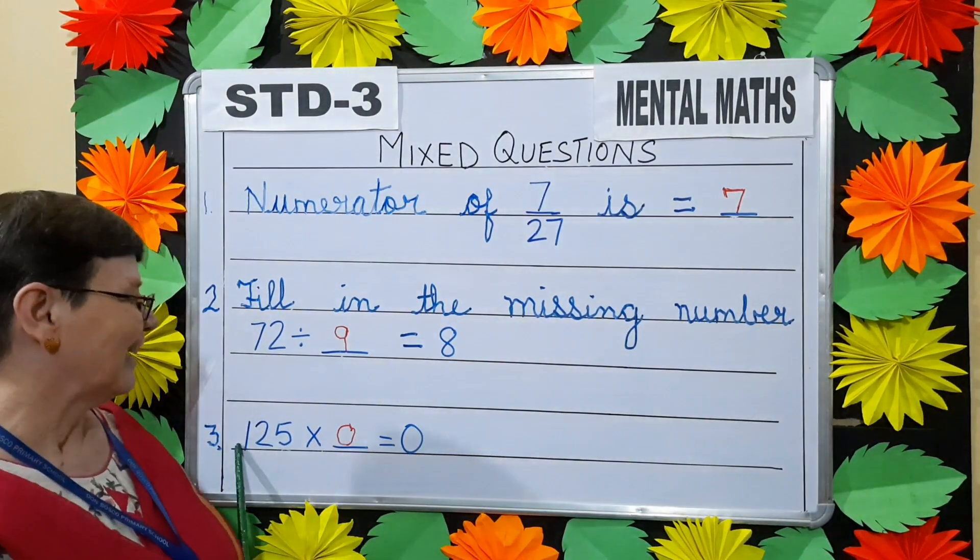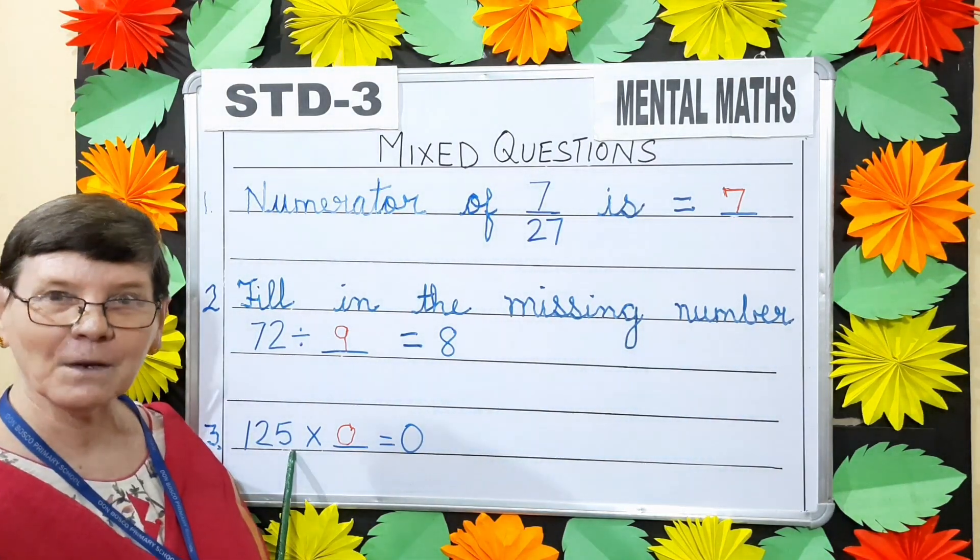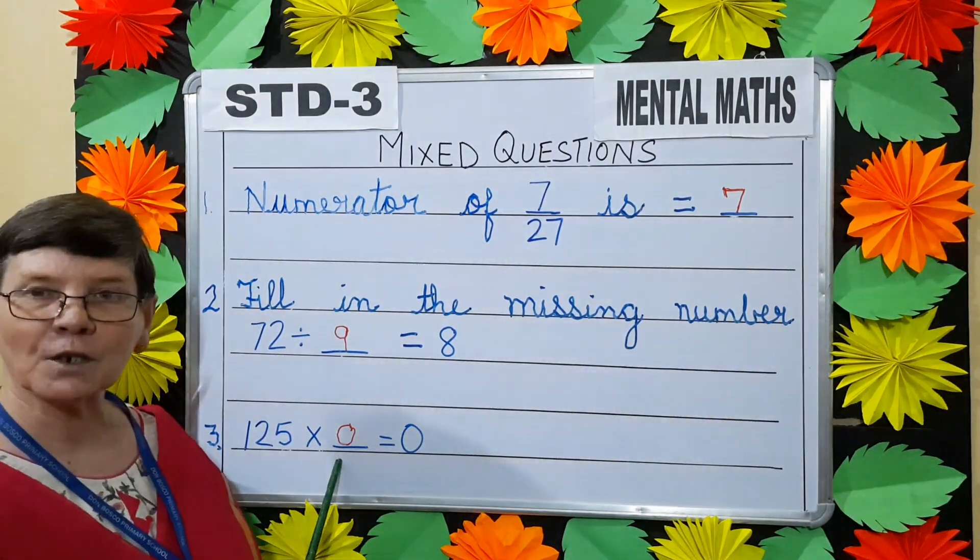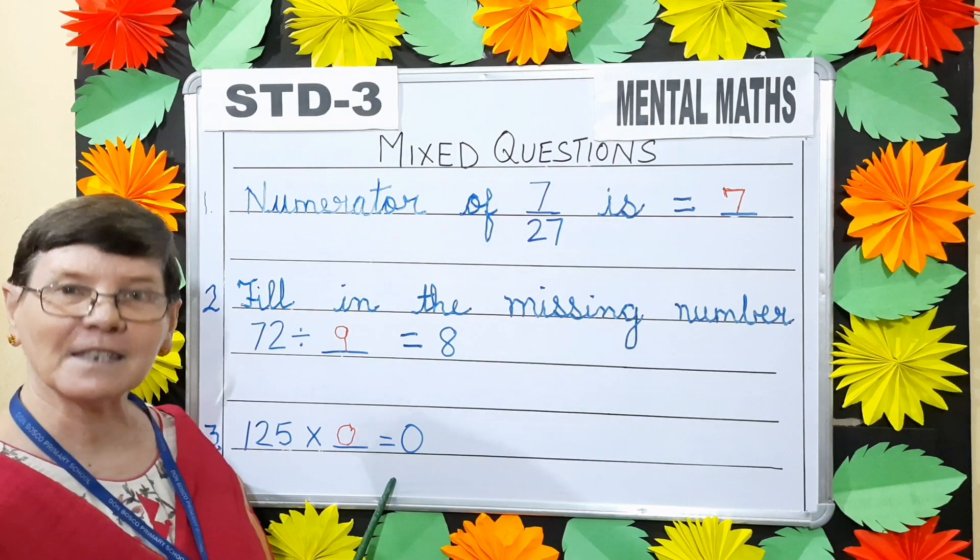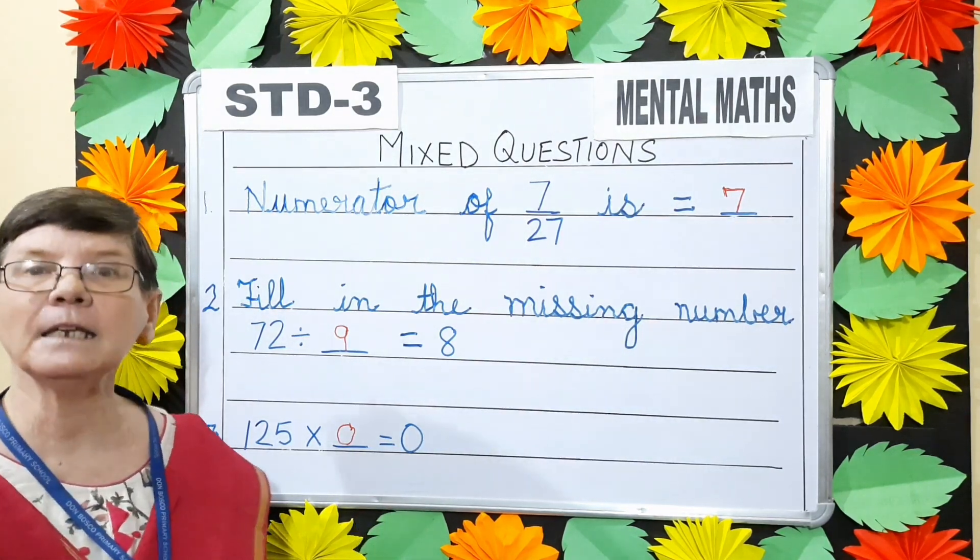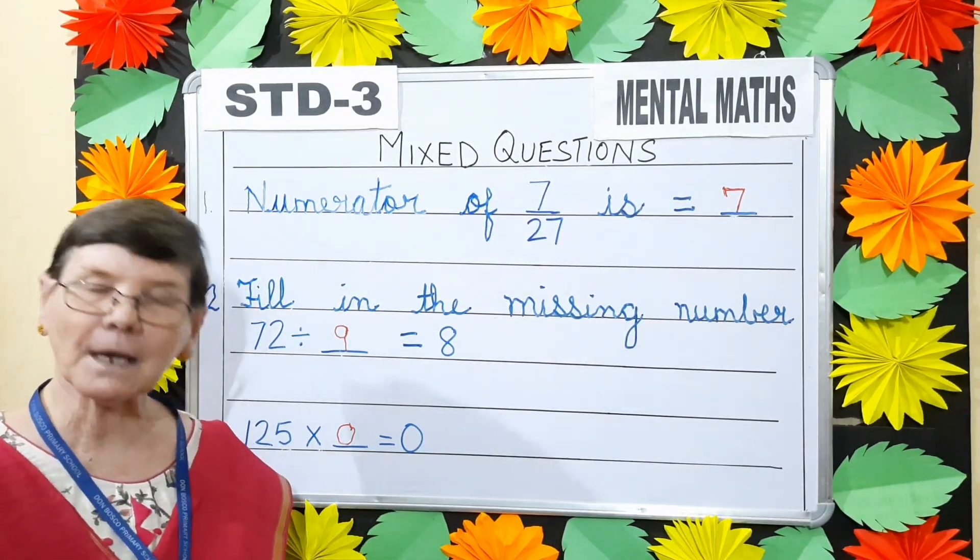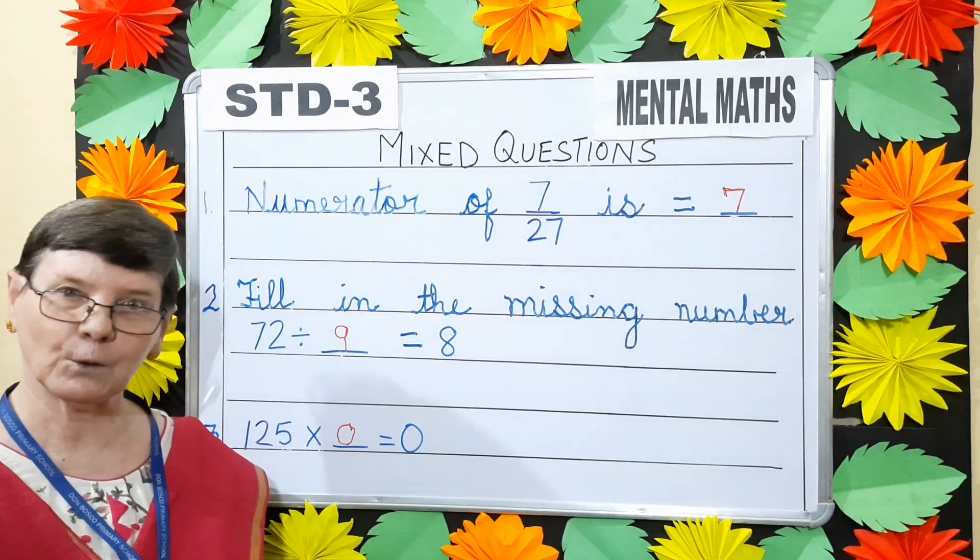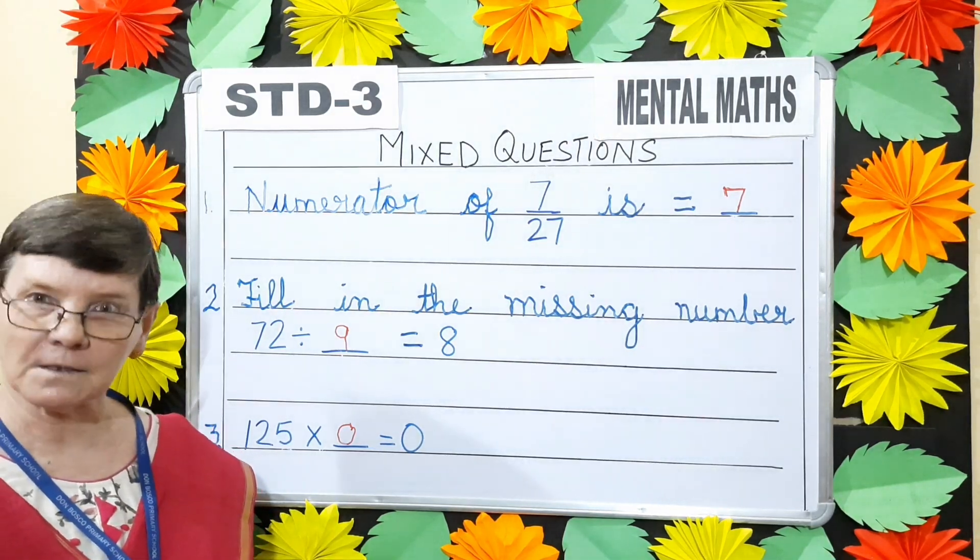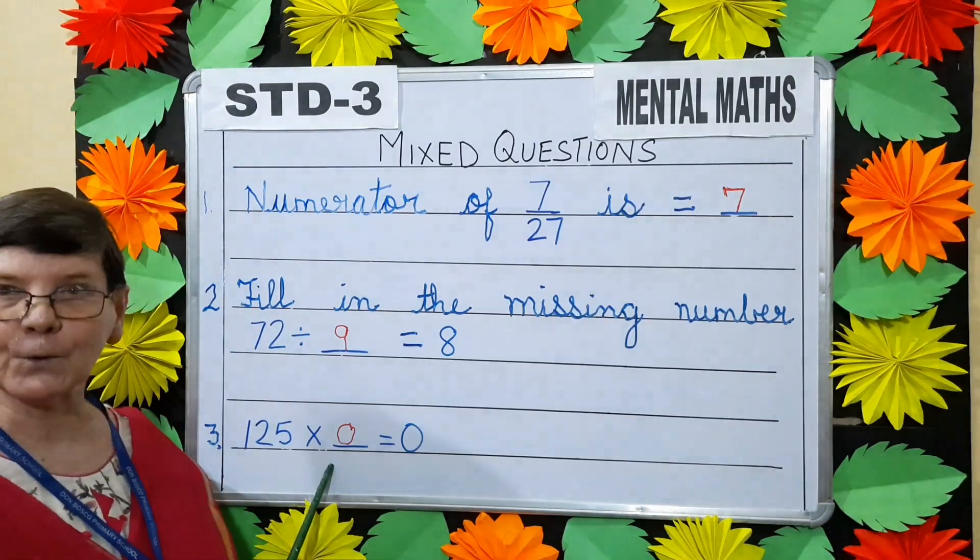Next, 125 multiplied by dash is equals to 0. Any number multiplied by 0 will give you 0 as the answer. So we will write 0.